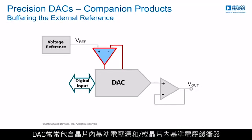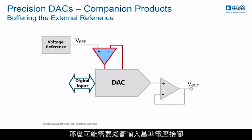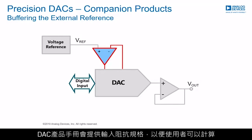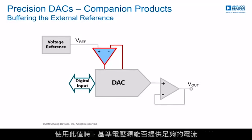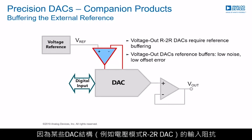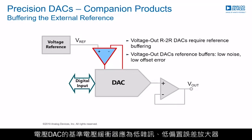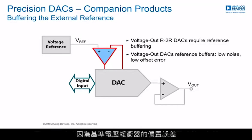Often DACs include on-chip references and/or on-chip reference buffers. If a DAC does not include either, the input reference pin may need to be buffered. The DAC datasheet will include the input impedance specification, enabling the user to calculate whether a voltage reference can supply enough current. This becomes complicated for DAC structures such as voltage-mode R2R DACs, whose input impedance varies substantially with the digital code applied. In such cases, the external reference must be buffered — ideally with a low-noise, low-offset-error amplifier, since offset errors in the reference buffer will transfer to gain errors at the DAC output.